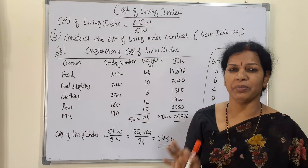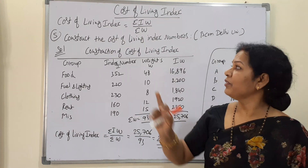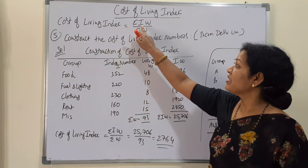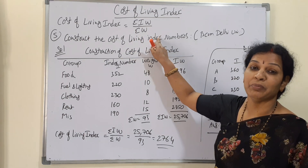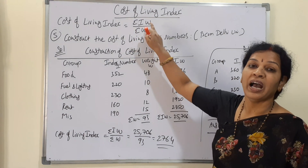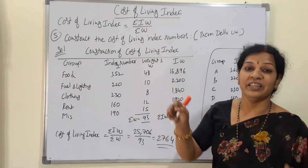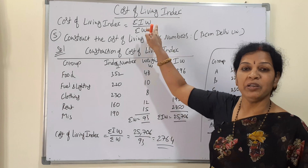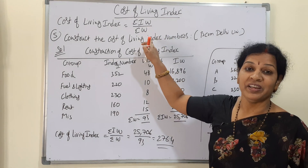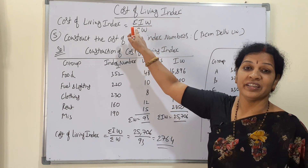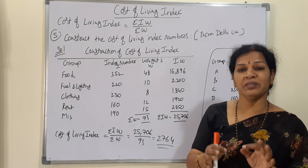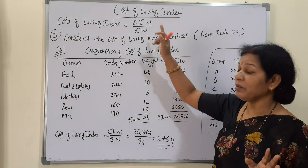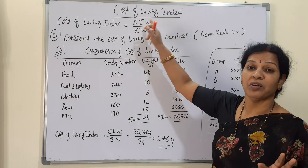You only need to remember the simple formula: the cost of living index number equals Sigma IW divided by Sigma W, where I means index numbers and W means weight. If these two are given, you simply apply them in the formula to get the cost of living index.